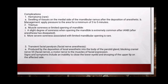The complications include: hematoma — swelling of tissues on the medial side of the mandibular ramus after deposition of the anesthetic solution; management is to apply pressure to the area for a minimum of 3 to 5 minutes. Trismus — muscle soreness or limited opening of the mandible; a slight degree of soreness when opening the mandible is extremely common after IANB, though most severe soreness with limited opening is rare. Transient facial paralysis or facial nerve anesthesia — produced by deposition of the local anesthetic into the body of the parotid gland, blocking the facial nerve (cranial nerve VII), which is a motor nerve to the muscles of facial expression. Signs and symptoms include an inability to close the lower eyelid and drooping of the upper lip on the affected side.